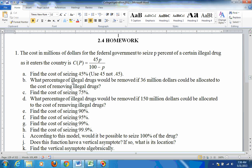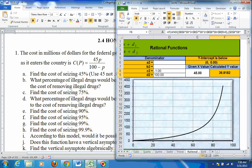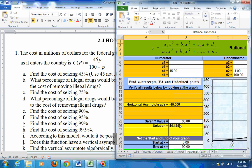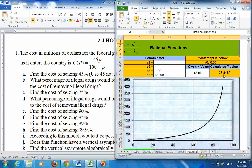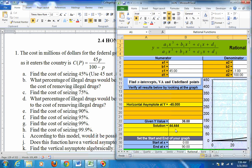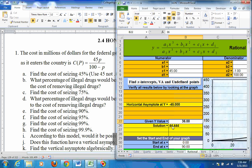Then part B says what percentage of illegal drugs would be removed if $36 million were allocated. Well, now it's telling you the cost, $36 million, that's a Y value. So put the 36 in for Y, and we get 44.444% that would be seized. And that makes sense because when we put in the 45 up here, we got a little bit more than 36. And when we put in a number here a little bit less than 36, we get a number less than the 45 over there. So these seem reasonable.